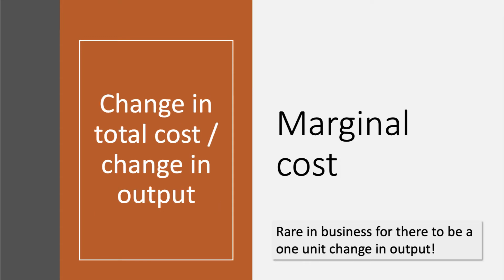Marginal Cost, MC, is the change in a firm's total costs as a result of a one unit change in Output — so it's Delta TC over Delta Q. It is rare in business for there to be a one unit change in Output; if you divide by the change in Output, you get the marginal cost.